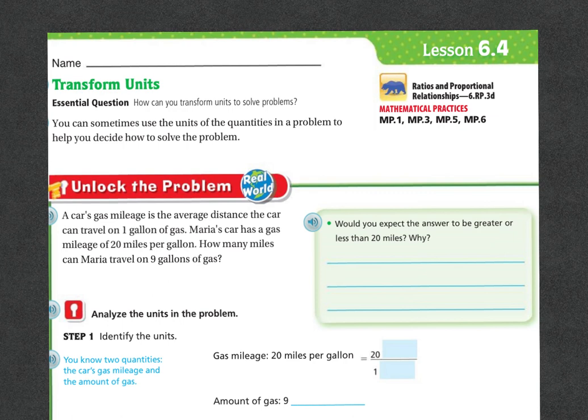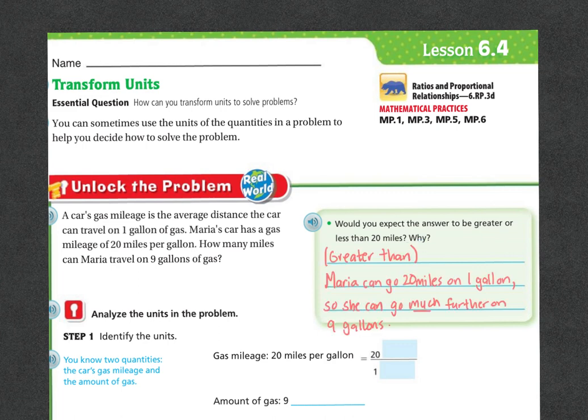Real-life problem that you might be encountering. Would you expect the answer to be greater or less than 20 miles and why? It's going to be greater because if Maria can go 20 miles on just one gallon, then she's going to go much further on nine gallons.